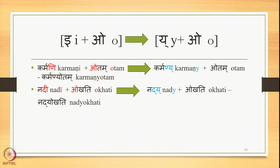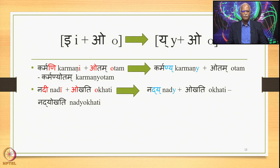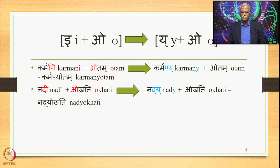For E plus O, 6.1.77 applies giving Y plus O. 'Karmani + Ota' (Ota is filled): E is followed by O, triggering 6.1.77, generating 'Karmaniya Ota'. Similarly, 'Nadi + Okhati' (Okha means to go): 6.1.77 applies and gives 'Nadya Okhati'.